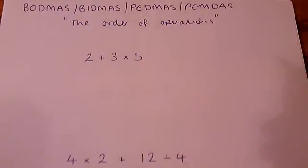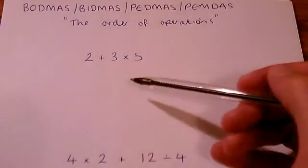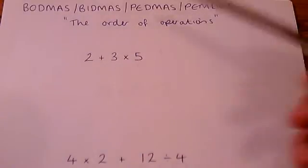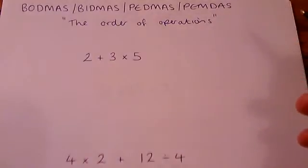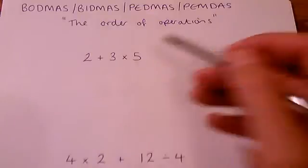You want to be able to write things in a single line of working. Anyway, that's enough babbling. This question here is a really simple one, but it catches people out all the time. People do 2 plus 3 to get 5, and then they times their answer by 5 and they get 25.